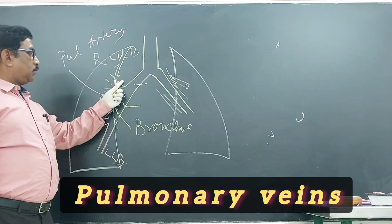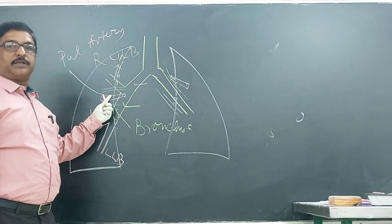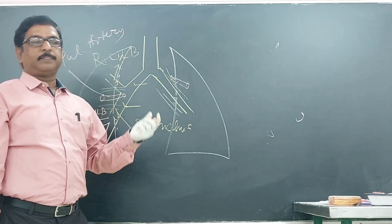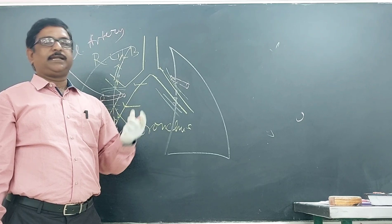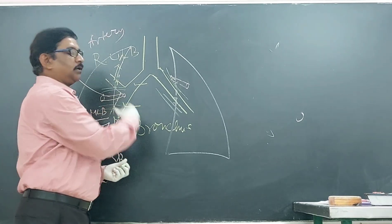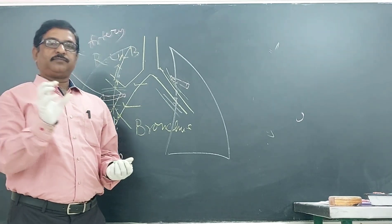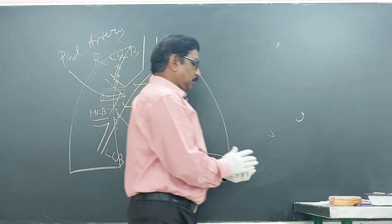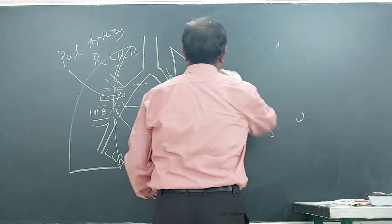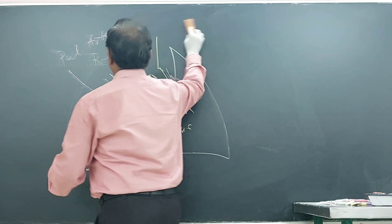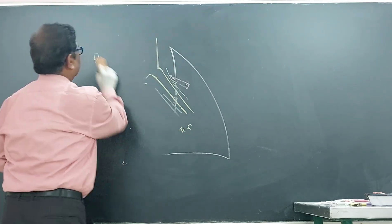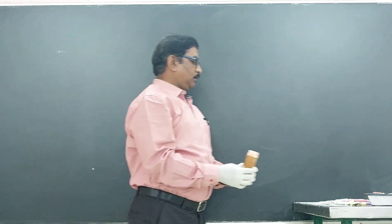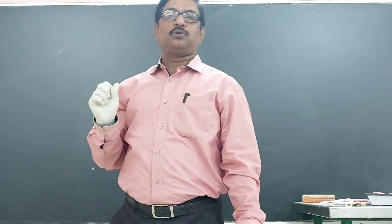Altogether, so many structures pass through the hilum including the bronchus, pulmonary artery, pulmonary vein, lymphatics, bronchial vessels, nerves, and some connective tissue. Some structures are entering into the hilum and some are coming out from the hilum. Keeping this basic anatomical knowledge, I will now tell you what is the hilum and what is the root of the lung.